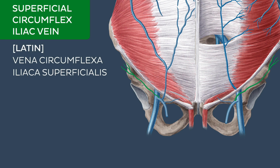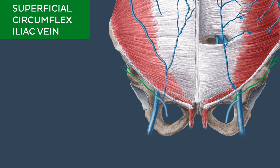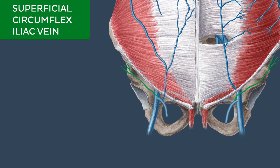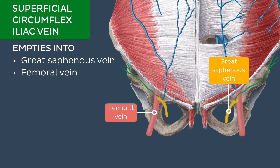The superficial circumflex iliac vein originates superficially within the superficial fascia of the inguinal region. It collects blood from the inguinal region and lower portion of the anterolateral abdominal wall. From its origin point, it extends along the inguinal ligament and descends to drain into the great saphenous or femoral vein.